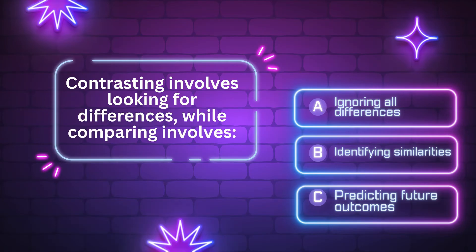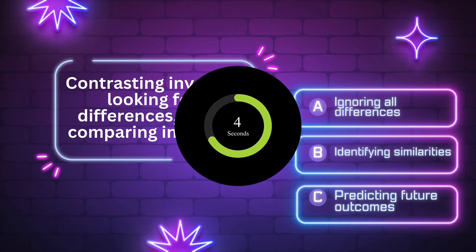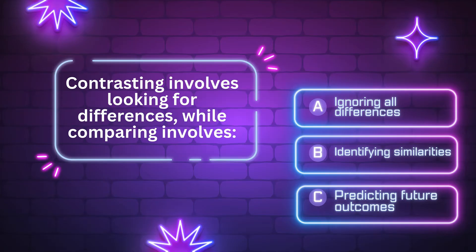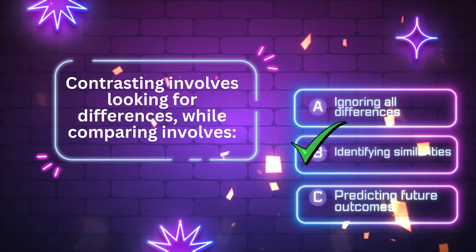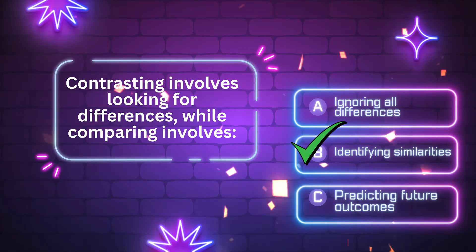Contrasting involves looking for differences, while comparing involves what? A. Ignoring all differences. B. Identifying similarities. C. Predicting future outcomes. The answer is letter B. Identifying similarities. Good job. Let's move on to the next question.